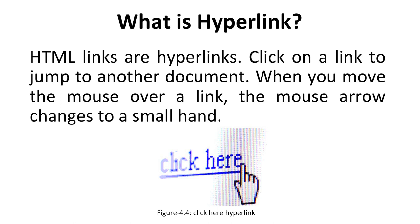What is a hyperlink? HTML links are hyperlinks. You click on the link to jump to another document. When we move the mouse over a link, the mouse arrow changes to a small hand — as you've all witnessed while browsing. For example, if a figure shows 'click here,' the triangular mouse arrow converts to a small hand, indicating it's a hyperlink.